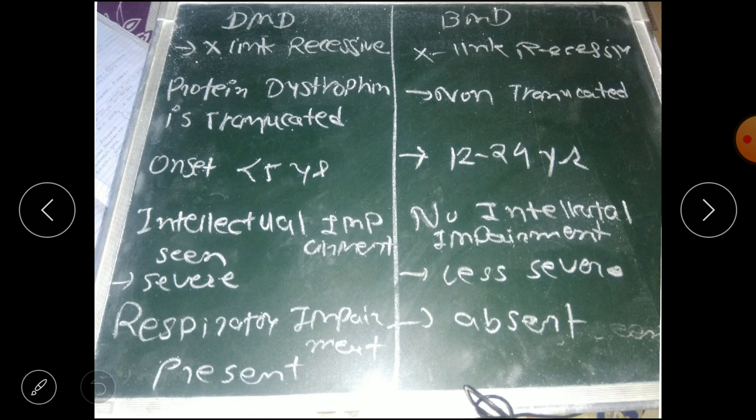So dystrophin, the protein, becomes non-functional when truncated. Protein dystrophin is truncated in DMD, but it is normal in BMD or it is only partially non-functional. Next,